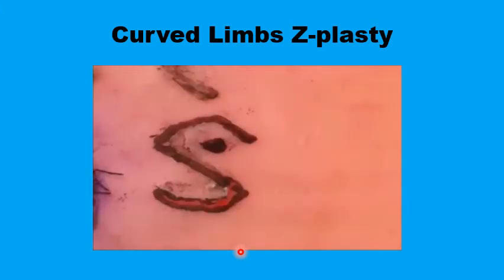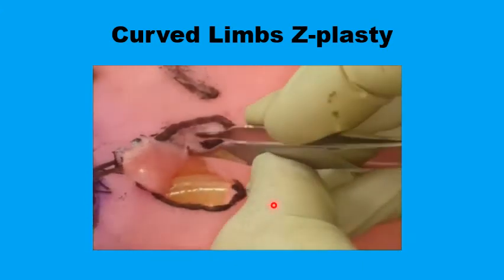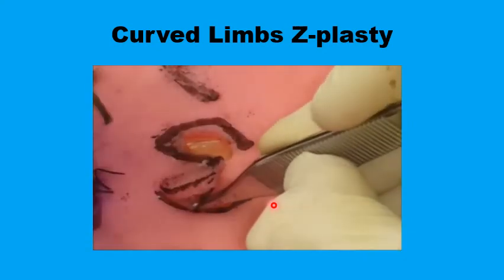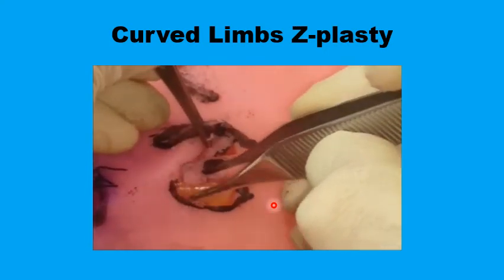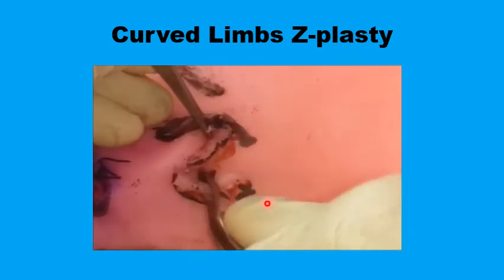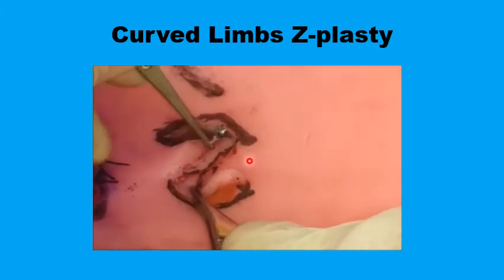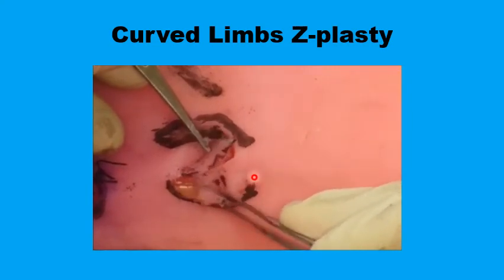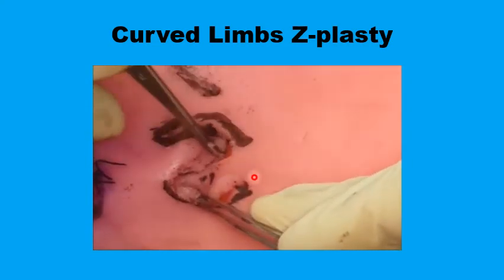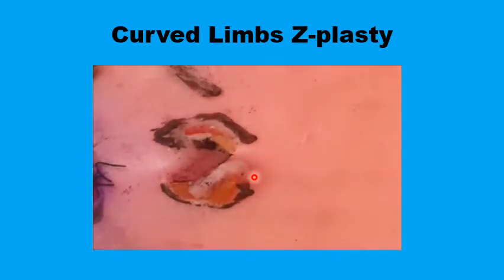Once undermined, the flaps can be transposed to their new position. You would notice that a dog ear deformity will form on the two flaps at the base, and that can be sorted out at the end after suturing the flaps in position.